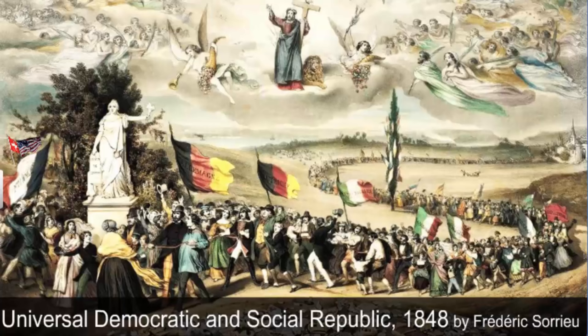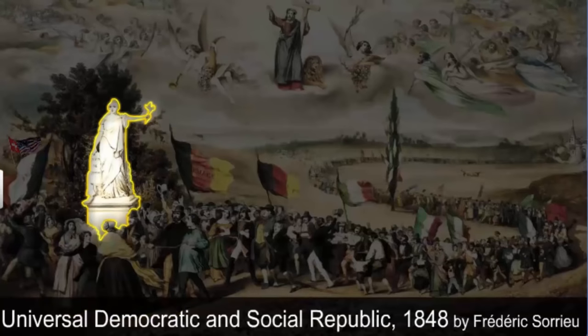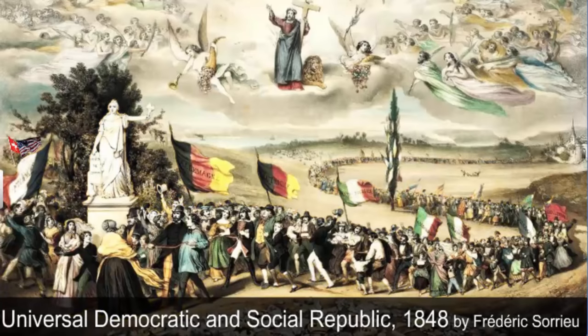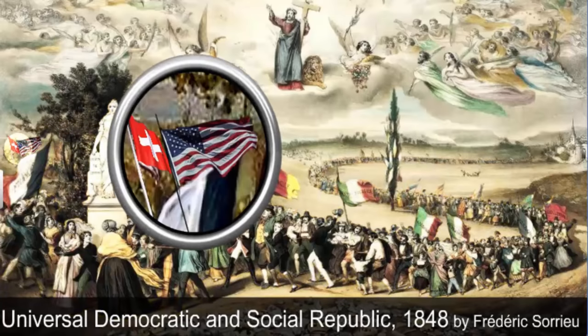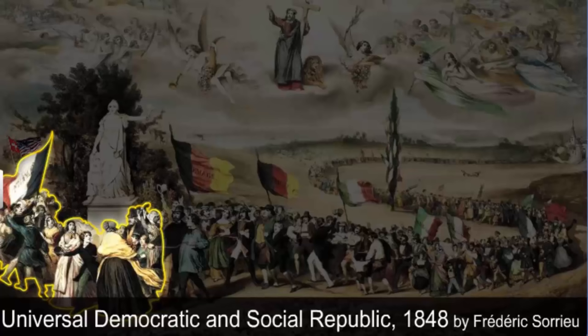If you look carefully, Soran shows people from different countries and all walks of life marching towards the Statue of Liberty, each of them wearing their national costume and carrying revolutionary flags. The countries leading the procession are the United States and Switzerland. They are followed by the French people carrying the revolutionary tricolor. France has just reached the Statue of Liberty.